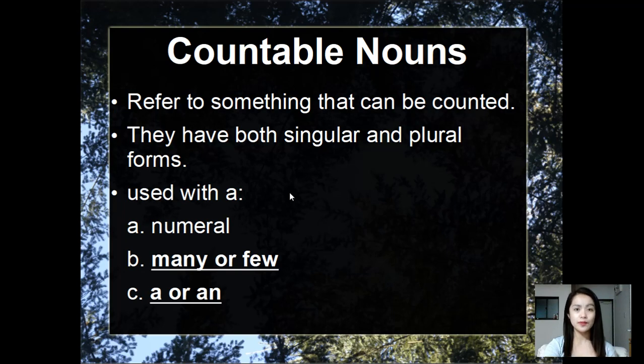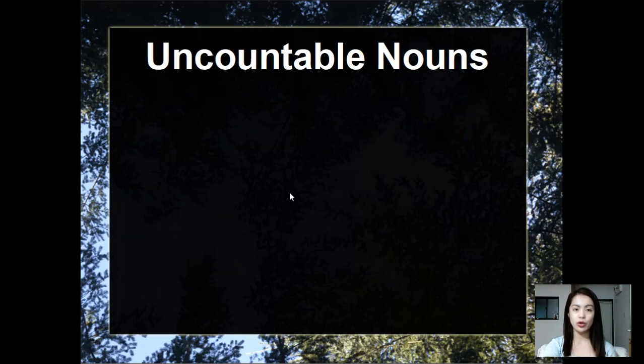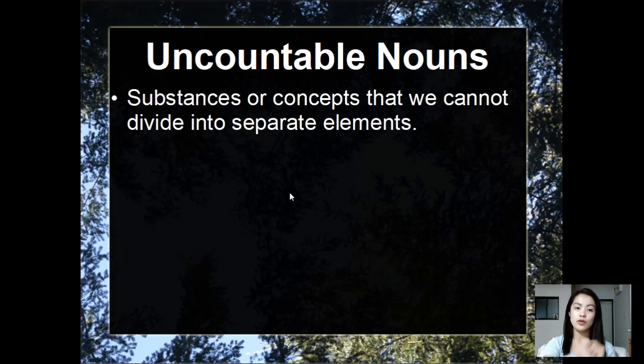Now let's move on to the opposite, which is uncountable nouns, also known as mass nouns. Uncountable nouns are substances or concepts that we cannot divide into separate elements - something that we cannot count.